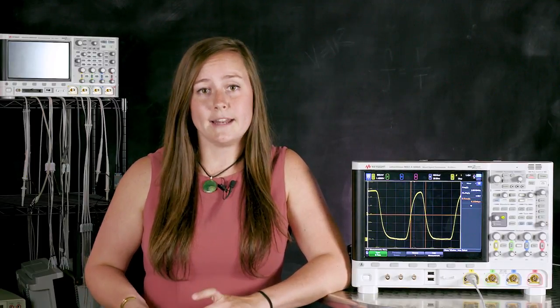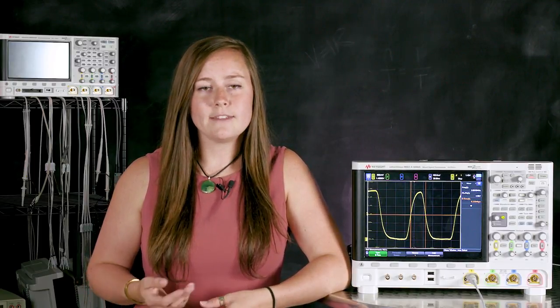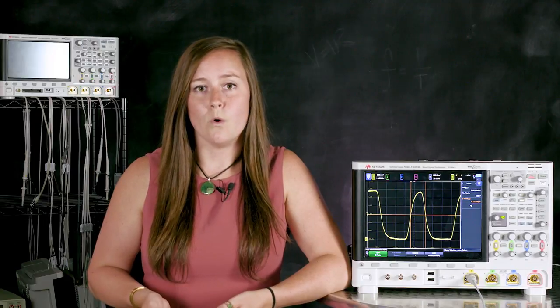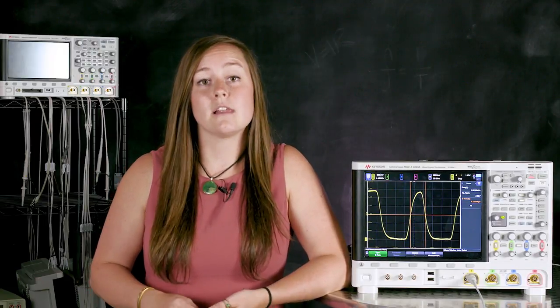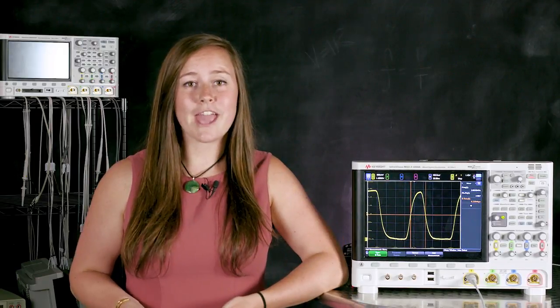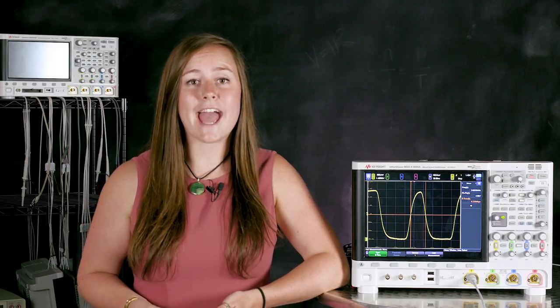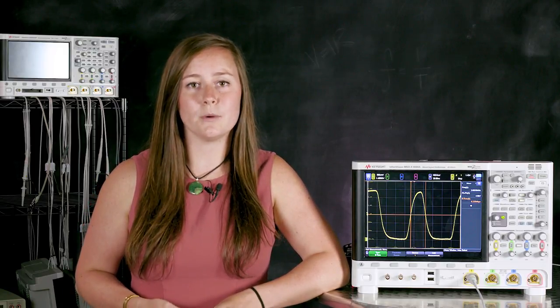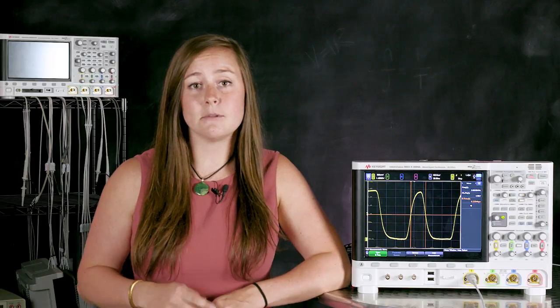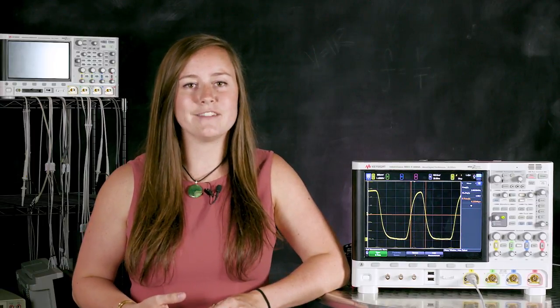So some signals use an explicit clock which just can be driven right into one of the channels of the scope. But other signals use an embedded clock. With an embedded clock you have to have some way to de-embed or recover it. So that's when you use clock recovery. So what the clock recovery actually does is calculate the exact ideal bitrate of the signal that you're working with. So let's take a look at some of the different clock recovery options that we have to work with.